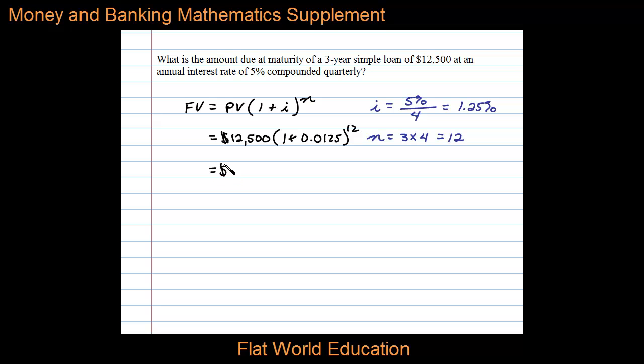To simplify the calculations, we can write $12,500 times 1.0125 raised to the 12th power.